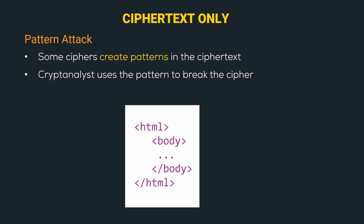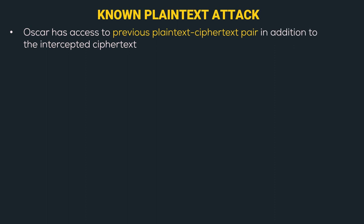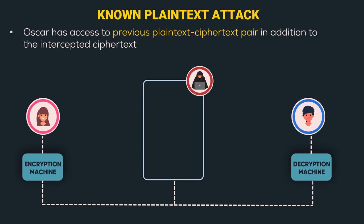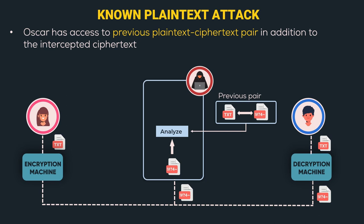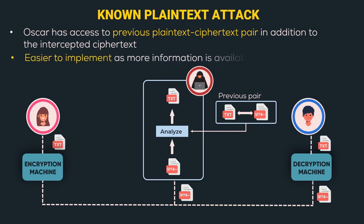The next is the known plaintext attack. In this attack, Oscar has access to a previous plaintext-ciphertext pair in addition to the intercepted ciphertext. Alice converts plaintext to ciphertext and sends it to Oscar and Bob. Oscar's analyze function receives the ciphertext plus a previous plaintext-ciphertext pair as input. This may happen when Alice has sent a message to Bob and later made its contents public. Oscar uses this pair to further analyze the current ciphertext to obtain the plaintext. Since we have more information, it is easier to implement.